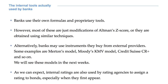To summarize, banks use their own formulas and proprietary tools. However, most of these are just modifications of Altman's Z-score, or they are obtained using similar techniques. Naturally, banks may also use instruments they can buy from external providers and use them as internal tools. As we can expect, similar methods are also used by rating agencies to assign a rating to bonds, especially when they first appear on the market.